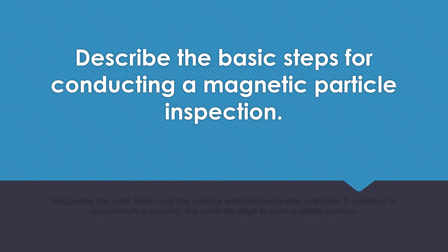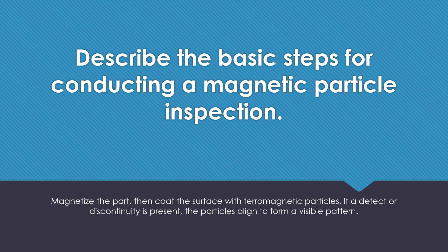Describe the basic steps for conducting a magnetic particle inspection. Magnetize the part, then coat the surface with ferromagnetic particles. If a defect or discontinuity is present, the particles align to form a visible pattern.